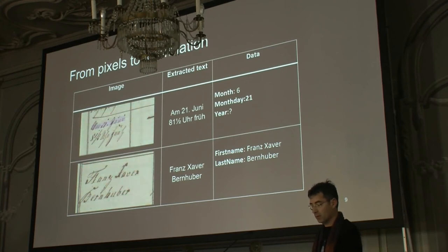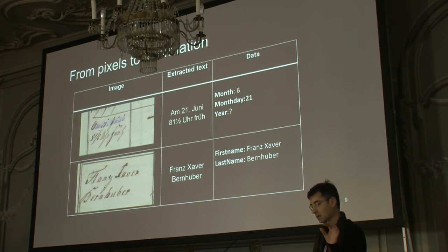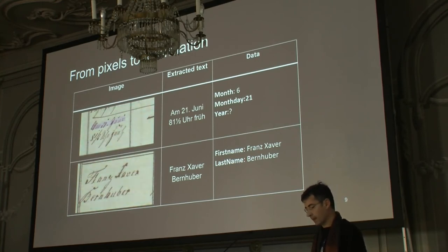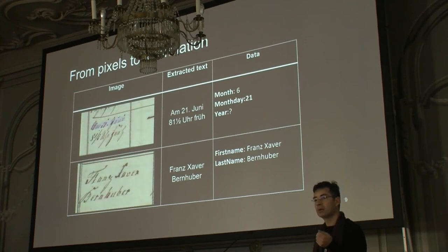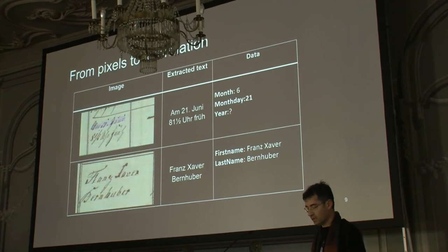If you have the first name and last name, you want to correctly identify the first name — or names — and the last name, so that you can query specifically each field. If you want to work on a field like the age, you have to extract the value but also extract the unit: it could be 10 years, six months, or two days. So you have to extract all this kind of information.